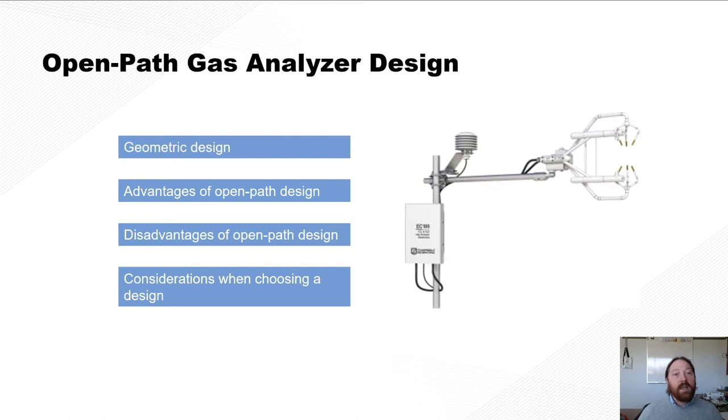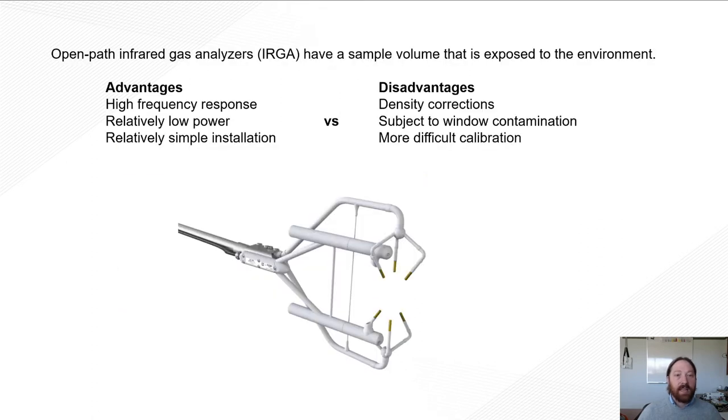So when we look at the open path gas analyzer design, we have to consider the geometric design, our advantages and disadvantages, and then also considerations when we're choosing which design to go with. So the open path design literally means that it's exposed to the environment. So it is an open sampling volume. So where we have a source on the top and a detector on the bottom, the volume between those two is our measurement volume, and it's open to the environment. Same thing with a sonic anemometer. This volume here is exposed to the environment and is therefore open.